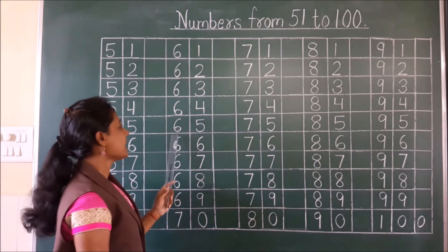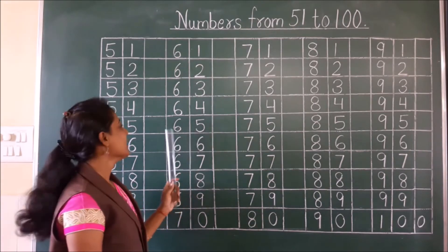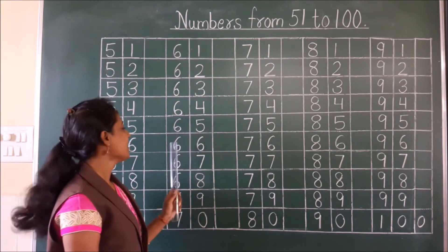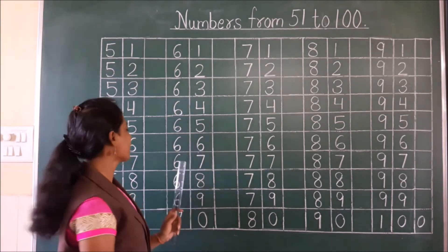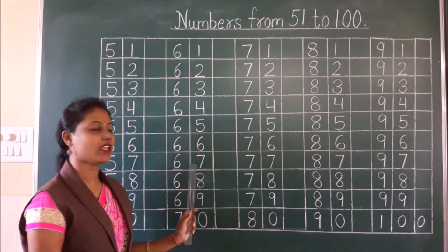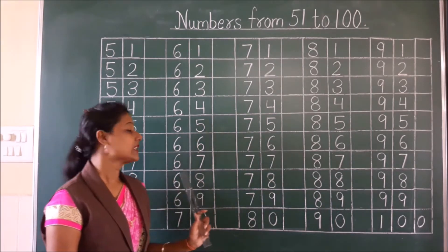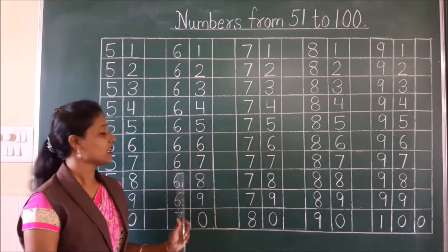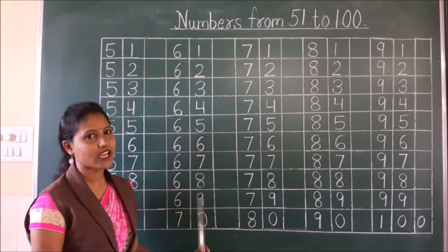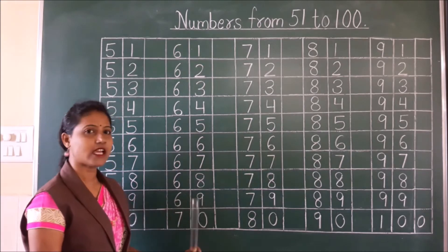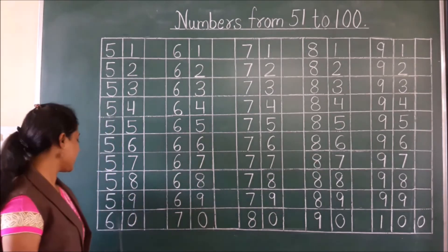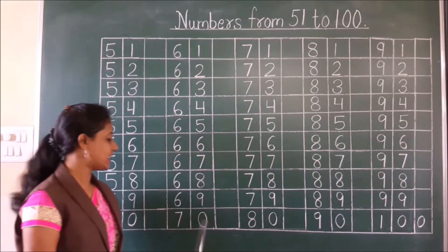Please repeat with me. 65, 65, 66, 66, 67, 67. After 67, what will count? 68, 68, 69, 69, 70, 70. You can check: 60, 70.